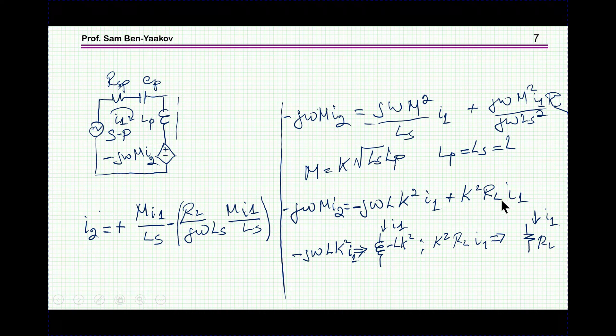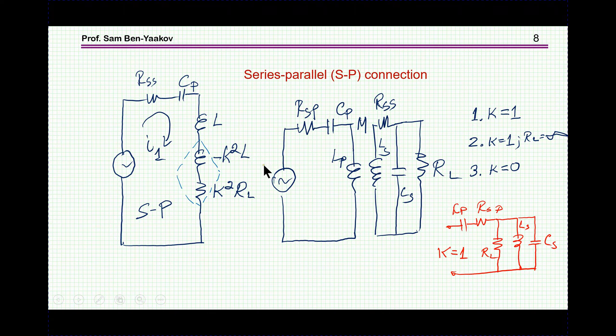Same thing goes for the RL. I can represent this expression as a resistor, which should be here K square RL. I'm sorry, there's a mistake here. And with the current of I1 passing through it. So, we end up with this figure, which shows that the reflection of the load back to the primary, or to the transmitting side, ends up with a real resistor plus an inductor, which is negative.